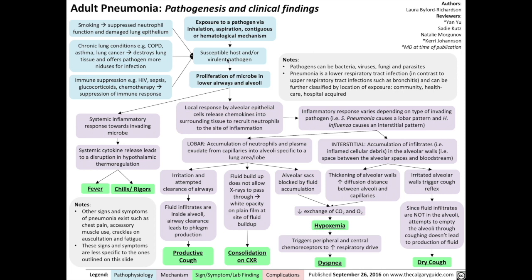In a susceptible host with a virulent pathogen, that pathogen is allowed to proliferate in the lower airways and the alveoli of the lungs. As a result, there is a systemic inflammatory process towards the invading microbe — systemic meaning in the whole body — as well as a local response in the alveoli themselves.